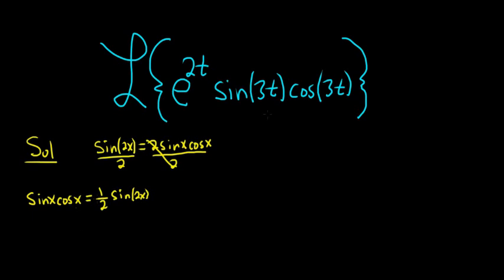Now our x here is 3t, right? So we can replace our x here with 3t. So then we have sine of 3t cosine of 3t equals, and then it's 1 half, and it's sine, and then it's 2 times 3t, so it's going to be 6t. All right, good stuff.